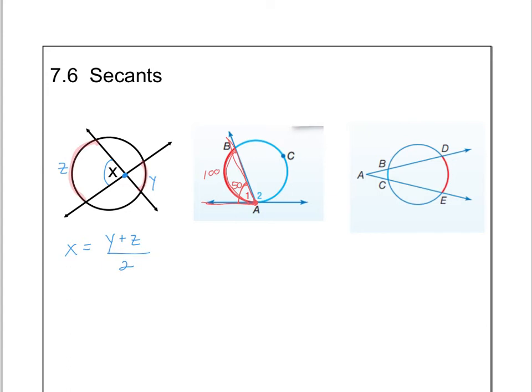And then the third situation is what if you have an angle like angle A that you want to find? Well, it's not even in the circle or on the circle. So when that happens, you're going to subtract. You're going to subtract the big arc minus the little arc and divide by two. So let's go to the next slide, and we're going to try a few of these.